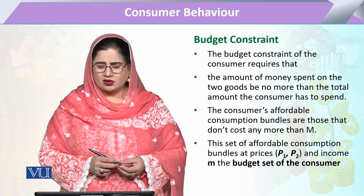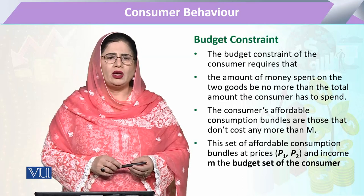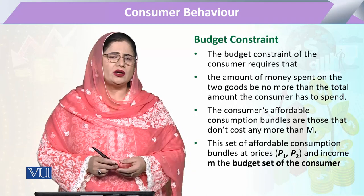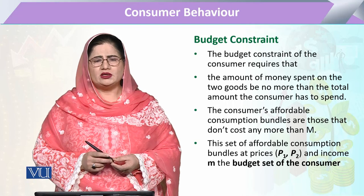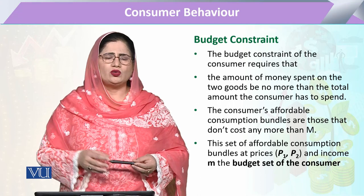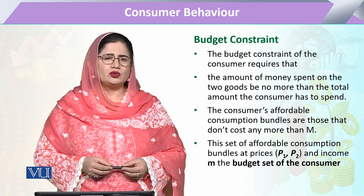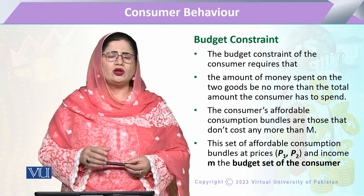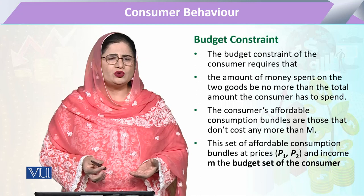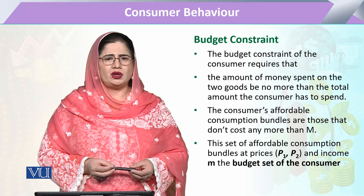That is the budget constraint. और consumer का जो affordable consumption bundle होगा, वो हमेशा वो होंगे जो उसके maximum budget के अंदर अंदर वो खरीद रहा हो। कोई भी ऐसा bundle जिसकी price multiplied by quantity जो वो purchase करना चाहता हो, अगर वो उसकी budget से ज्यादा हो, तो यह उसकी wish list हो सकती है — यह उसकी affordable नहीं हो सकती। So, budget constraint is actually the other name of the total affordability of a consumer. Thank you.